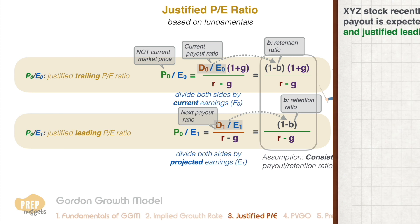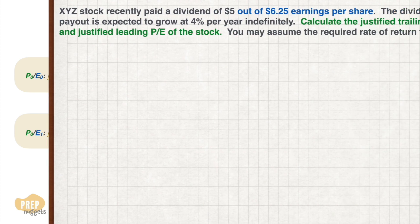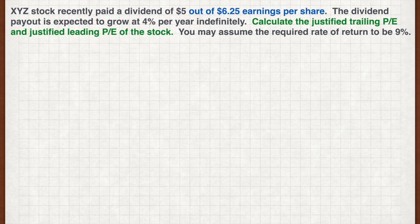Looking back at our example of XYZ stock, let's say the current $5 dividend was paid out from earnings of $6.25. Calculate the justified leading PE and justified trailing PE of the stock if the growth rate is estimated at 4% and the required return is 9%.